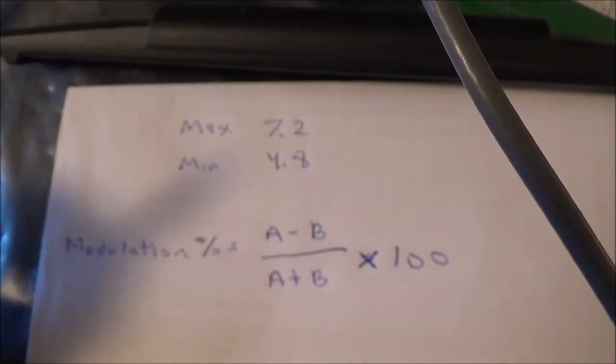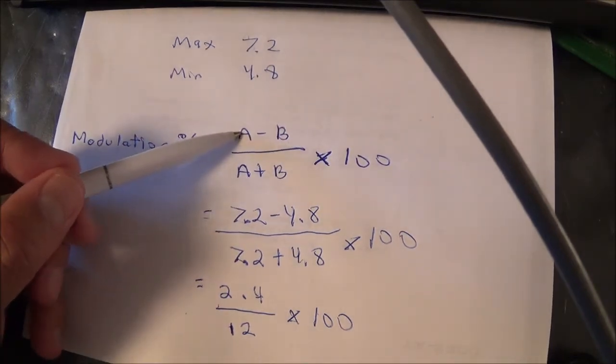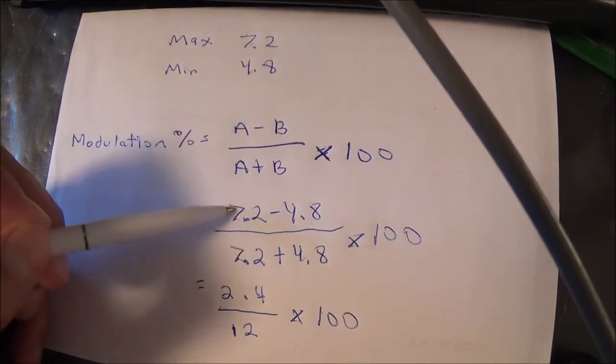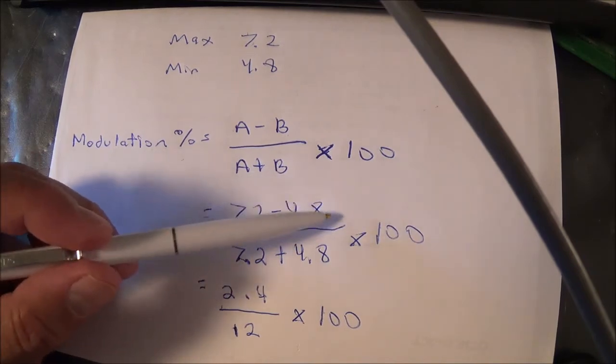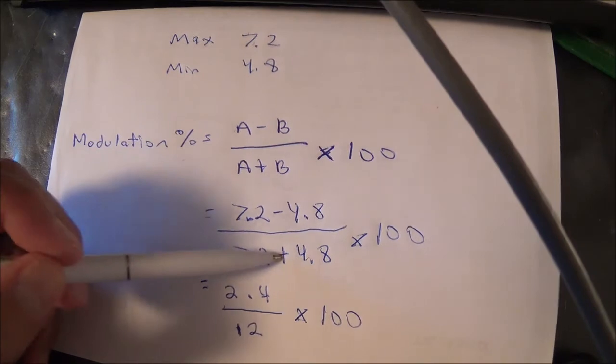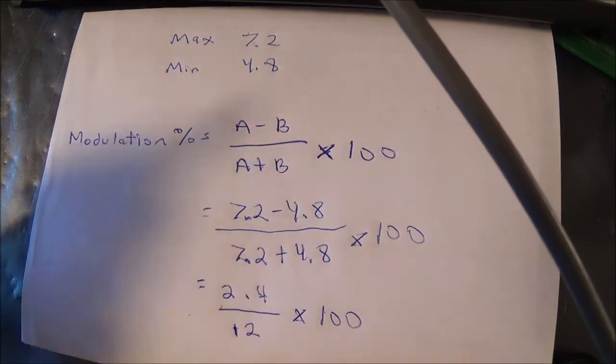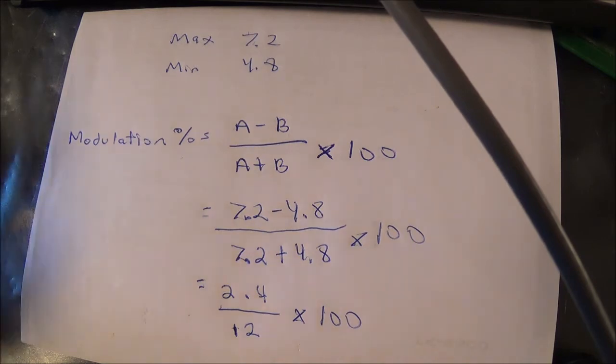Now let me go ahead and find a calculator. And here's my actual calculation. Again, A means maximum, B is minimum, and the maximum was seven point two, the minimum was four point eight. So we take seven point two minus four point eight, and we take that result and divide that by seven point two plus four point eight. That gives me two point four on top and twelve on the bottom. Now I take this times 100, and that's supposed to give me the modulation percentage. So let me do that math. Two point four divided by 12 times 100 equals 20%, or rather equals 20, and that's going to equal 20%.